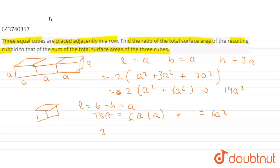We are having three cubes here. So total surface area of these three cubes combined will be 18A square. So the ratio will be 14A square divided by 18A square which is equal to 14 is to 18 or we can simplify it as 7 is to 9. This is our answer.